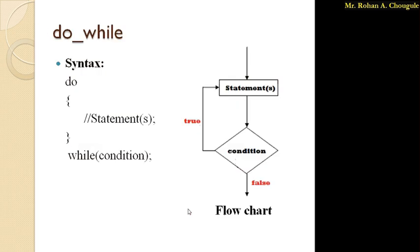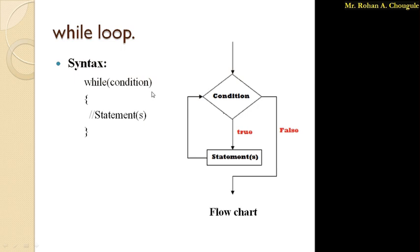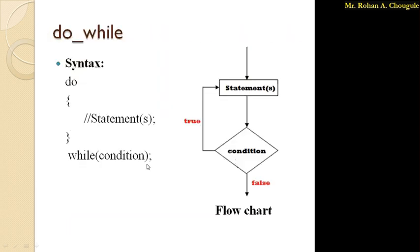Here is the syntax for do-while loop. First we write the keyword do, then opening and closing curly brackets containing the statements we want to execute repeatedly when condition is true. After writing the statements, we write while with the condition in brackets. Remember: in do-while loop, after the while condition we must write a semicolon — unlike the while loop where no semicolon is written after the condition.